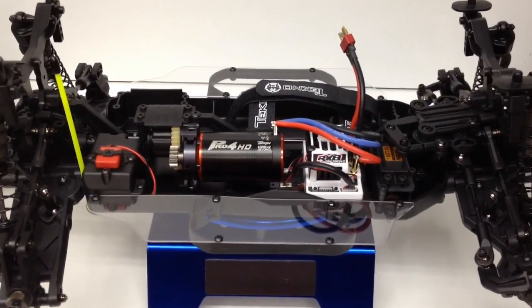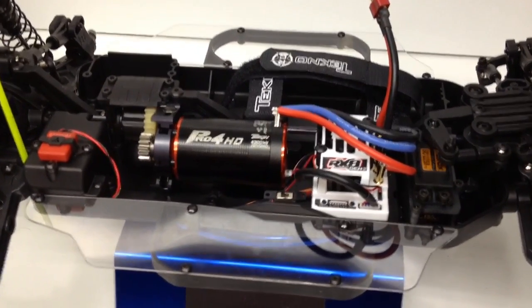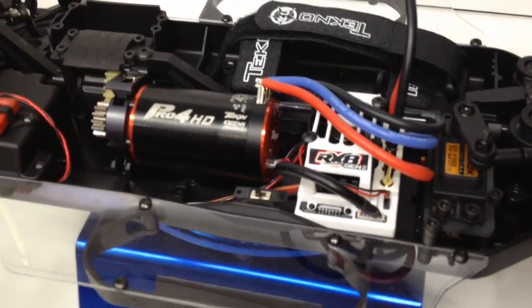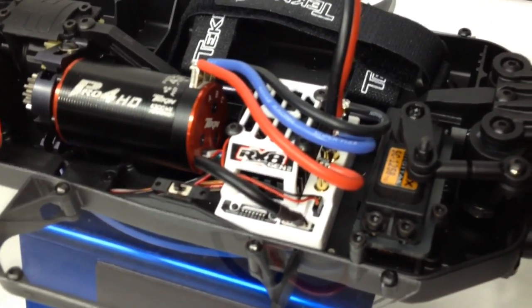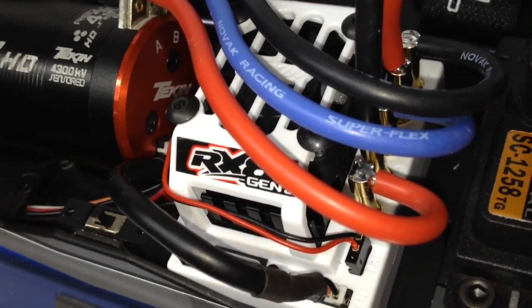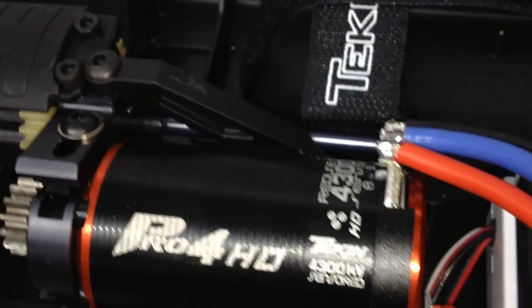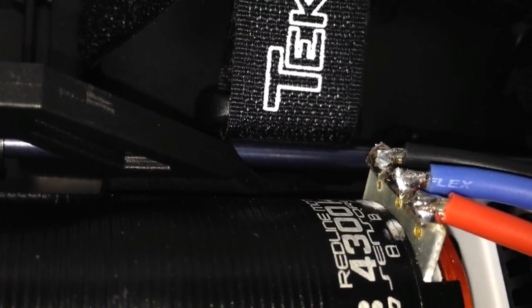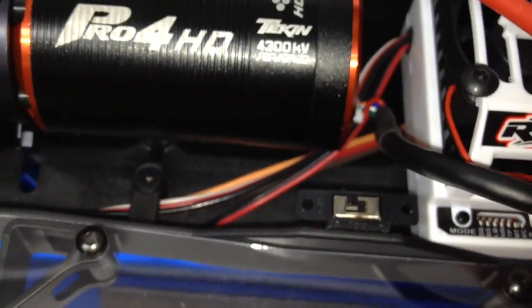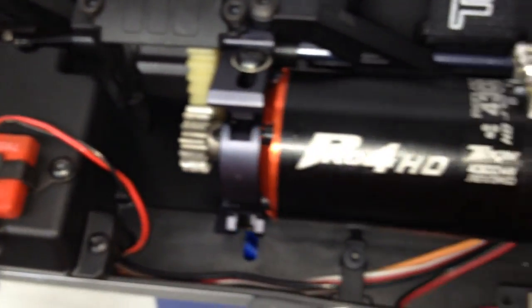All right guys so I went ahead and grabbed the camera now. I finished soldering so pretty much all the soldering is now done with the RX-8 and also the Pro 4 HD. Everything turned out very nice. I'm really happy with the routing of all the wires and everything's pretty good. Hopefully take you guys in somewhat close so you can see some of the soldering points right there. Seems like they turned out very nice. They seem like they have a very solid connection. Go ahead and throw you guys up here on the motor. Everything looks pretty good.